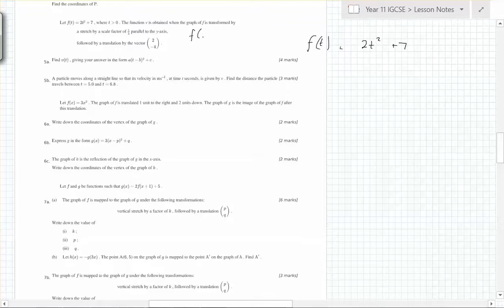to the y axis, that means in the y direction. If it was f of x, what do you do to f of x to apply a stretch scale factor in the third in the y direction? It's just 1 over 3 times f of x. Then it says, followed by a translation by the vector 2 minus 4.